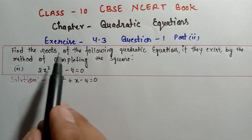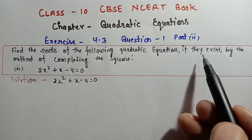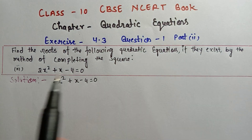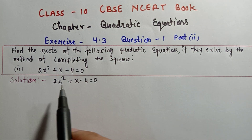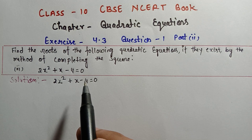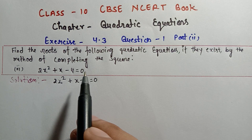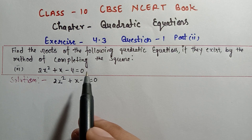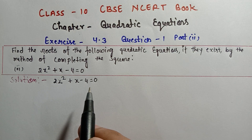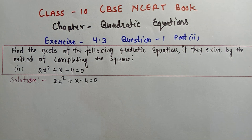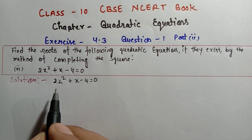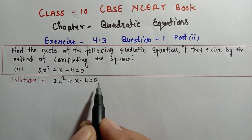The question is: find the roots of the following quadratic equation if they exist by the method of completing the square. We will solve this quadratic equation using the completing the square method and find its roots. So the equation is: 2x² + x - 4 = 0.